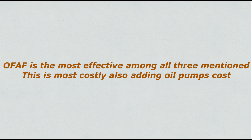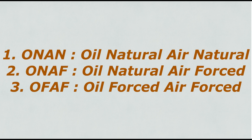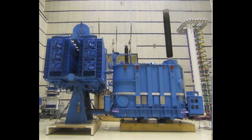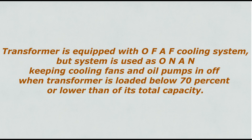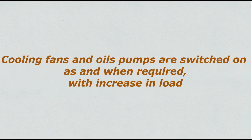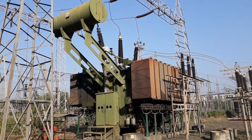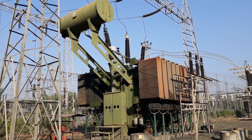This is the most costly system as well, adding oil pump costs. So these are the commonly used cooling systems. In some cases, a transformer is equipped with an OFAF cooling system, but is used as ONAN — keeping cooling fans and oil pumps off when the transformer is loaded below 70% of its total capacity. Cooling fans and oil pumps are switched on as and when required with increase in load.